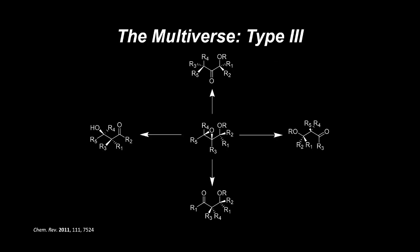Type 3 rearrangements are a bit more complicated. By employing an epoxide, four general types of rearrangement are possible from this setup, depending on which way the epoxide opens up and whether it acts as a leaving group or not.